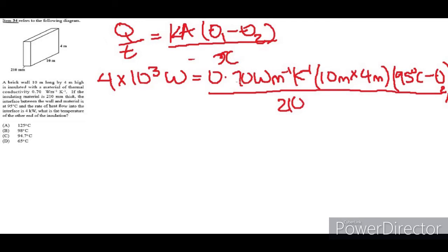Now let's see, we're trying to find theta 2. So right here we're going to take this 210 times 10 to the minus 3 and multiply it by this 4 times 10 to the 3 watts, and putting that into the calculator should get 840 watt meters.